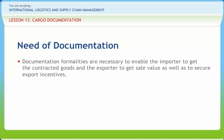Documentation formalities are necessary to enable the importer to get the contracted goods and the exporter to get sale value, as well as to secure export incentives. In other words, export documents are needed to comply with commercial, legal, and incentive requirements. For commercial purposes, physical possession of the goods will be linked with the acceptance of a payment document by the importer. In actual practice, a set of documents giving proof of shipment and cargo insurance coverage, along with a bill of payment, is sent by the exporter to the importer through the banking channel.